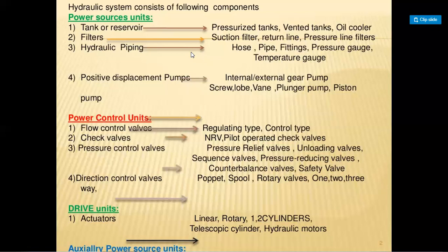Direction control valves are used to change the direction of fluid flow. These include poppet, spool, and rotary valves, as well as counter balance valves and safety valves. The last category is actuators — linear actuators, rotary actuators, one or two cylinder actuators, telescopic cylinders, and hydraulic motors. These are the different actuators used in the hydraulic system.